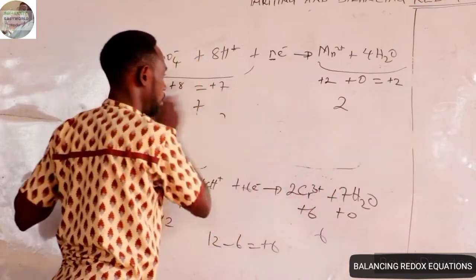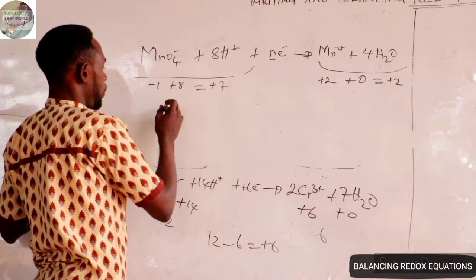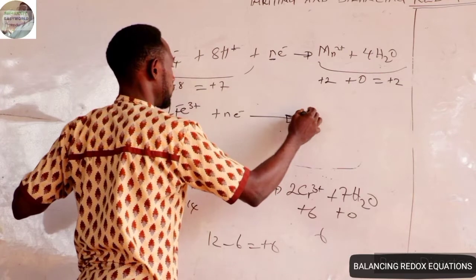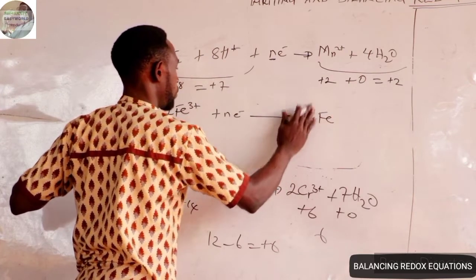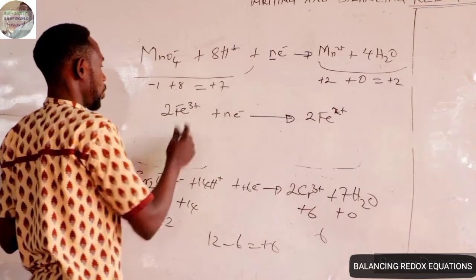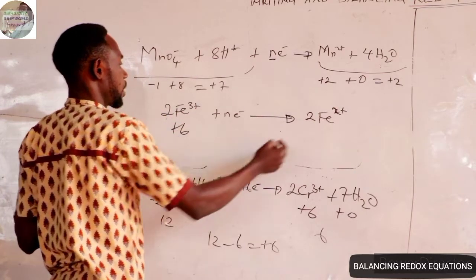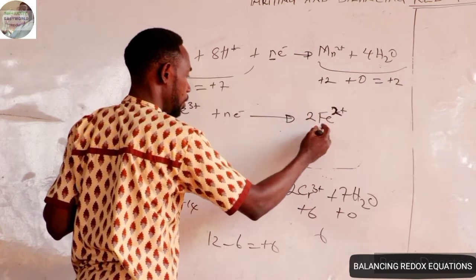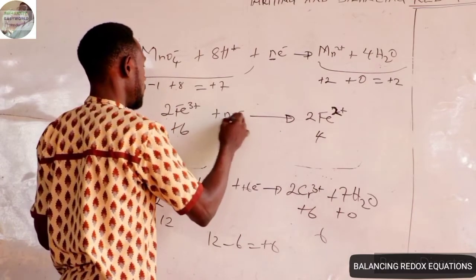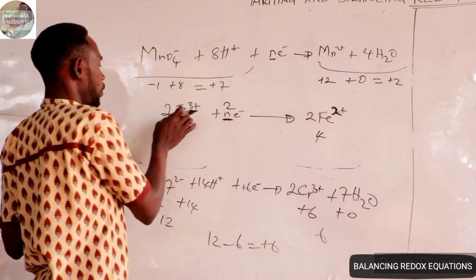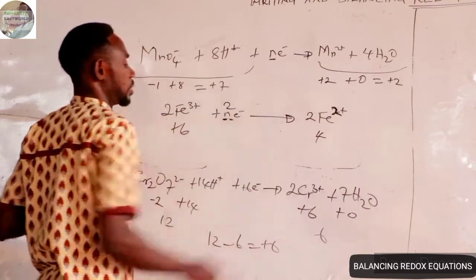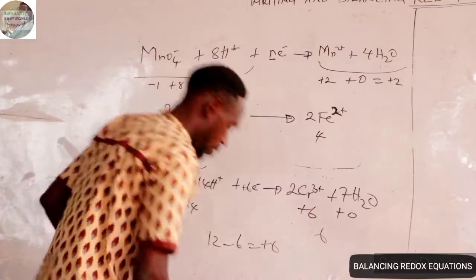To test you again: if you have 2Fe³⁺ + ne⁻ → 2Fe²⁺, find the value of n. On the reactant side: +3 × 2 = +6. On the product side: +2 × 2 = +4. Therefore n = 6 − 4 = 2. So n = 2, meaning you need 2 moles of electrons to reduce two atoms of Fe³⁺ to two atoms of Fe²⁺. That is what n represents — the number of moles of electrons.